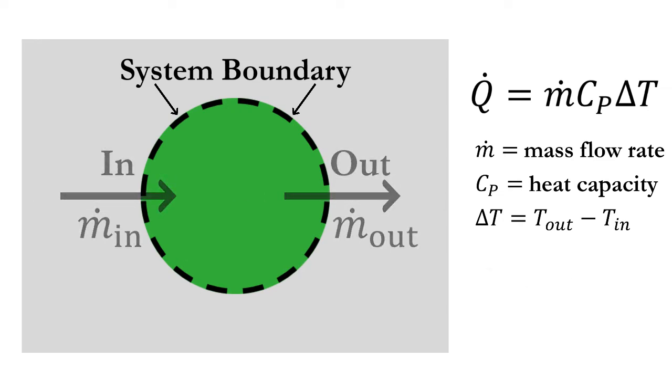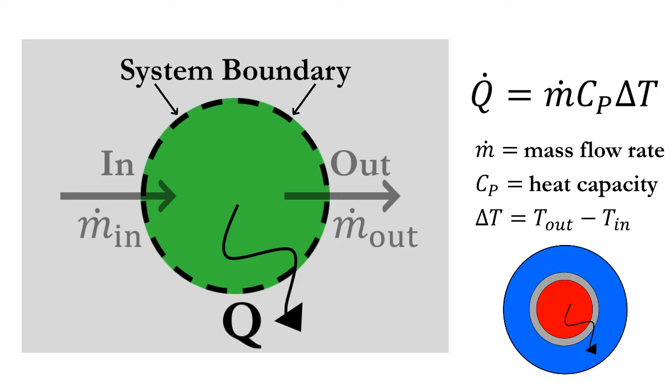Next, we must consider the transfer of energy across our system boundary. Since we know that heat, or energy, is transferred from the hot fluid to the cold fluid in our heat exchanger, we must choose a system that includes the location where heat transfer occurs.